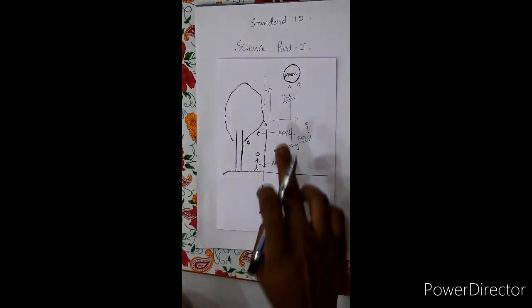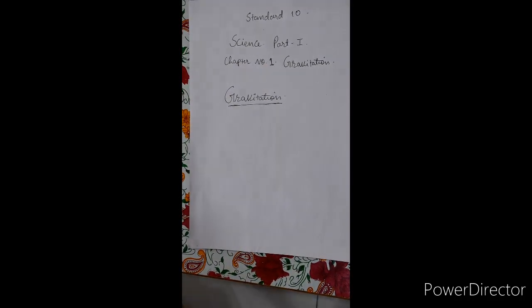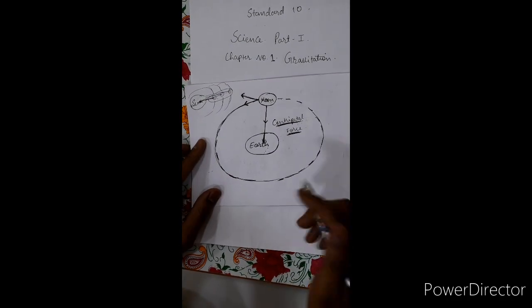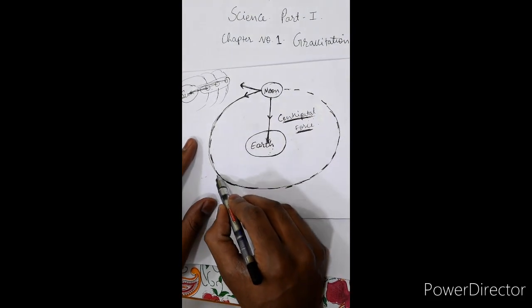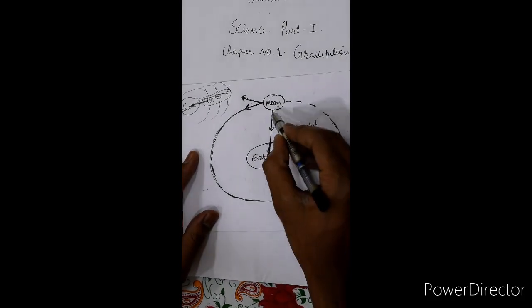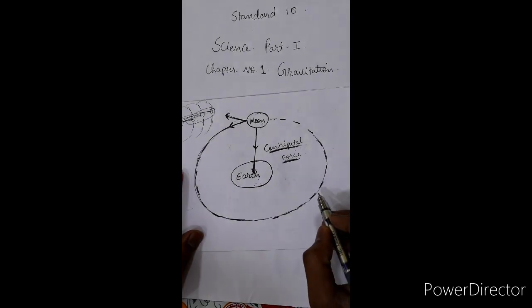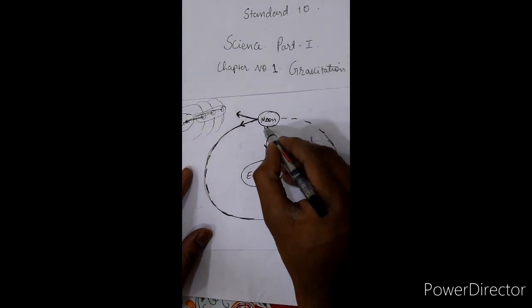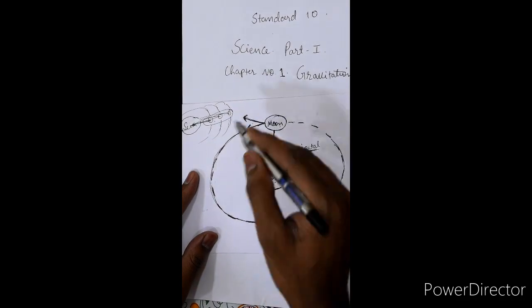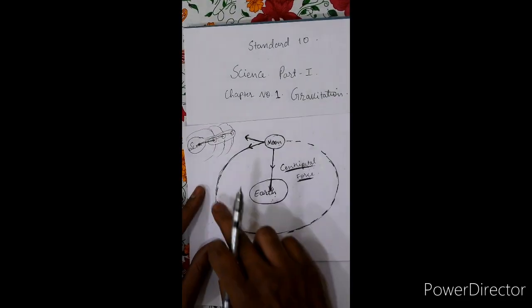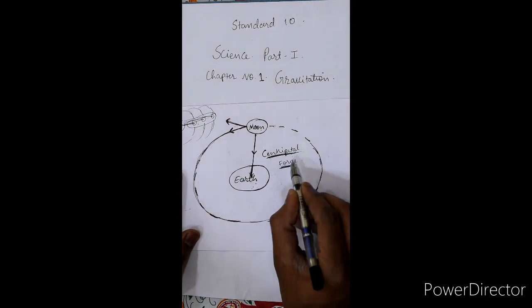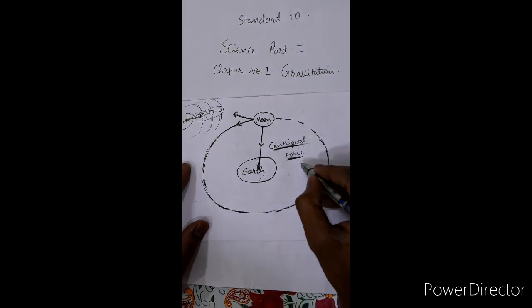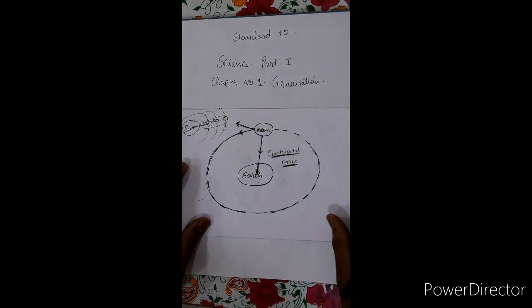Let us understand the concept — why doesn't the moon fall on the earth's surface? The moon is not falling to the earth's surface but is revolving in a circular orbit around the earth. The moon is neither falling on the earth's surface nor leaving the earth's gravity and going anywhere in space, but is revolving around the earth. The reason behind this is the centripetal force. In order to understand centripetal force, we have to do one activity.